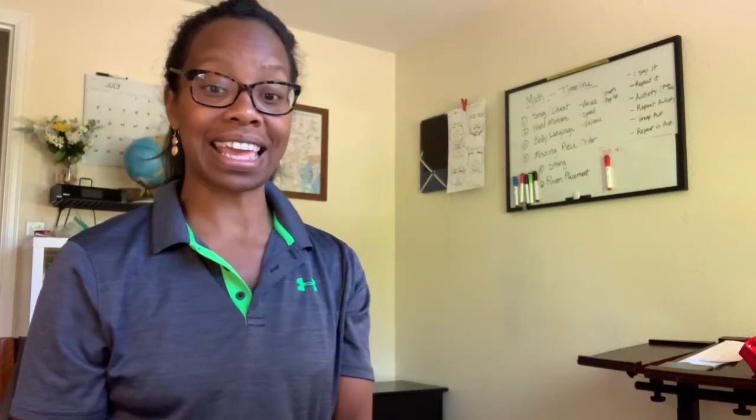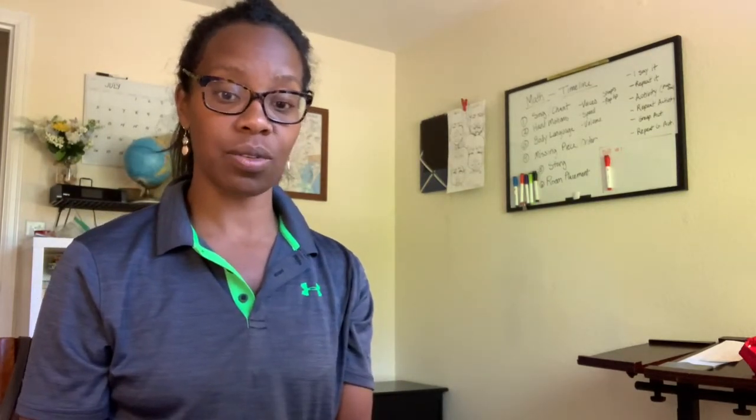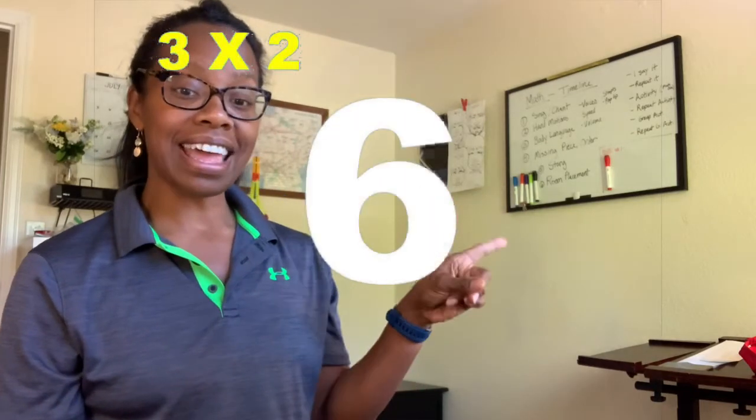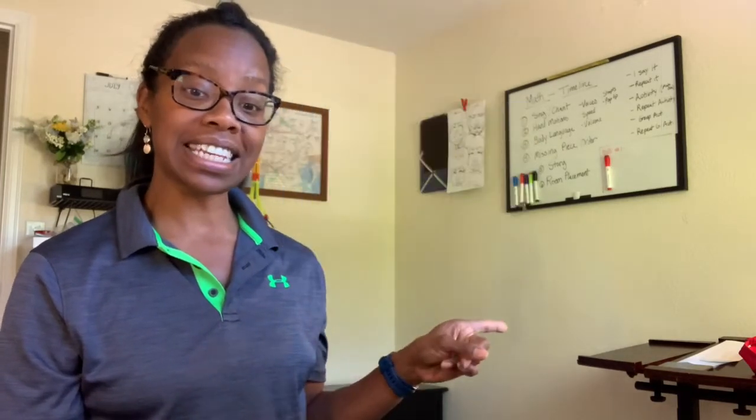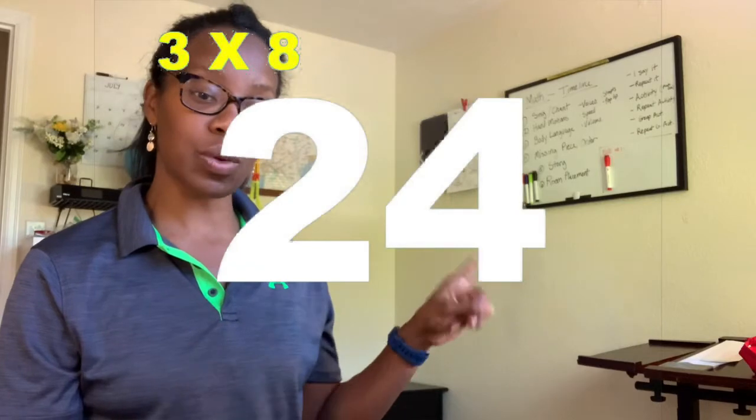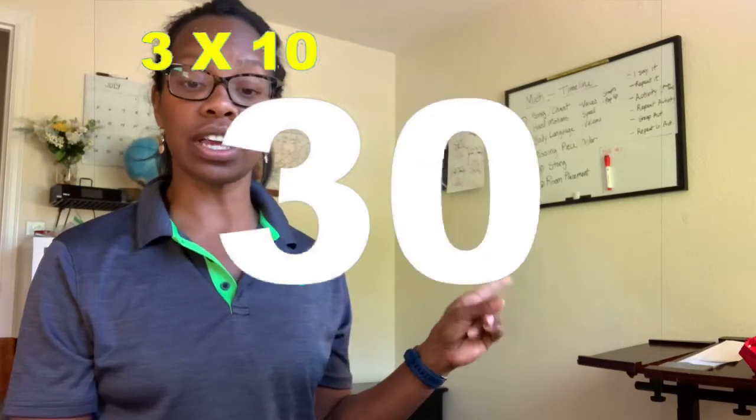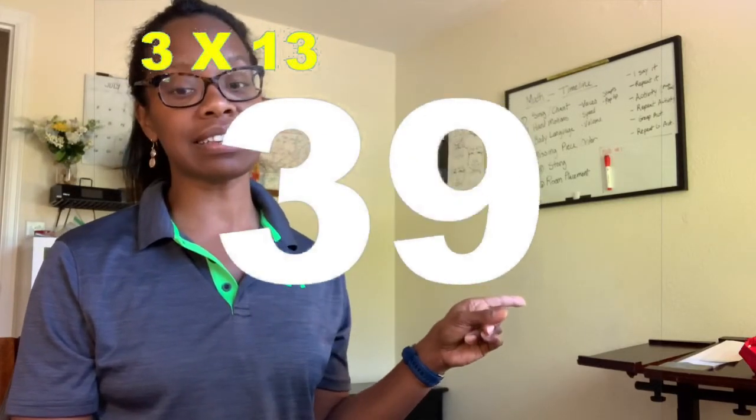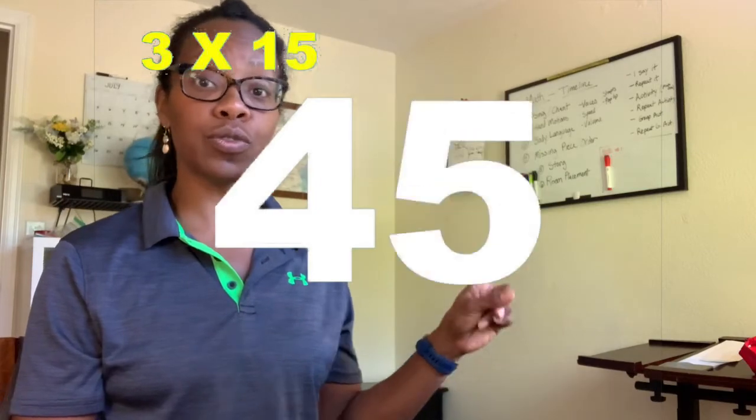Okay, can we say it together now? Three, six, nine, twelve, fifteen, eighteen, twenty-one, twenty-four, twenty-seven, thirty, thirty-three, thirty-six, thirty-nine, forty-two, forty-five.